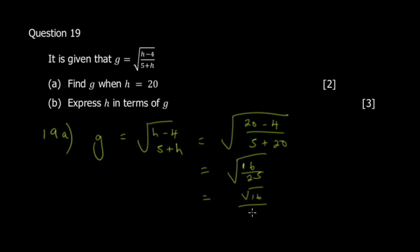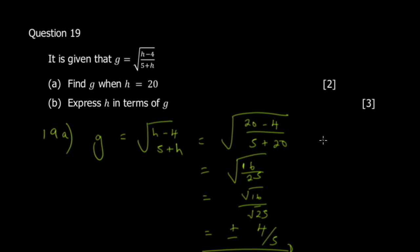Square root of 16 over square root of 25 gives 4/5. Don't forget to put plus or minus — it's always safer. A square root of any number equals plus or minus that value, especially where the question is worth two marks.